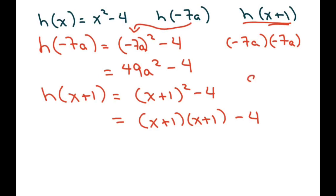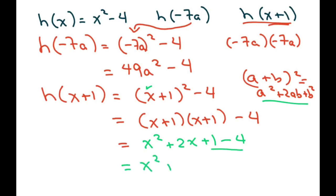Or use the fact that a plus b squared equals a squared plus 2ab plus b squared. So I'm just going to use my formula here. So I'm going to square my a plus 2ab, which is 2x, plus 1, 1 squared minus 4, and you're going to have to combine those two. So that's going to equal x squared plus 2x, and 1 minus 4 is minus 3. And that's your final answer.